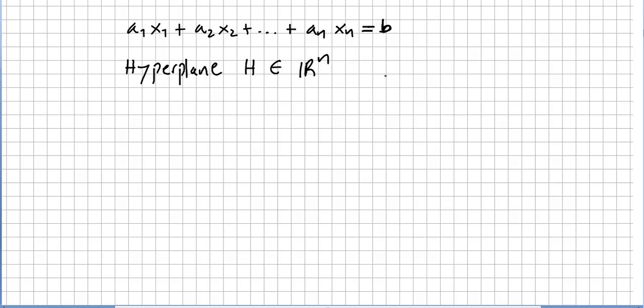So the hyperplane will be this one, and we saw in the previous video that the normal vector to this plane will have components a1, a2, and an. Those are the components for the normal vector.